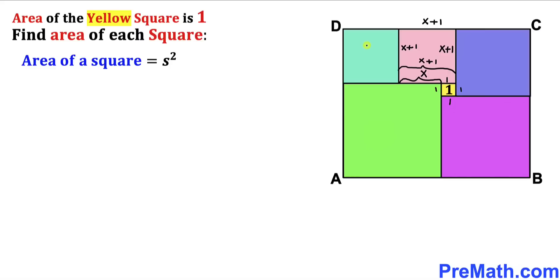Now let's focus on this turquoise square. We can see that both of these squares have the same dimensions, so therefore this side length is going to be x plus 1, and this side length is x plus 1 as well.